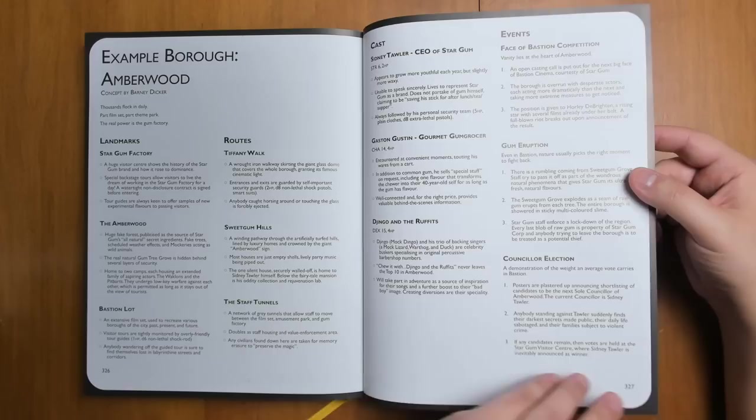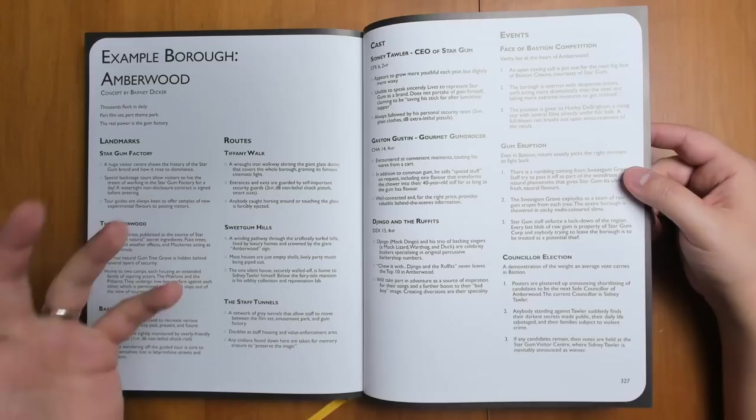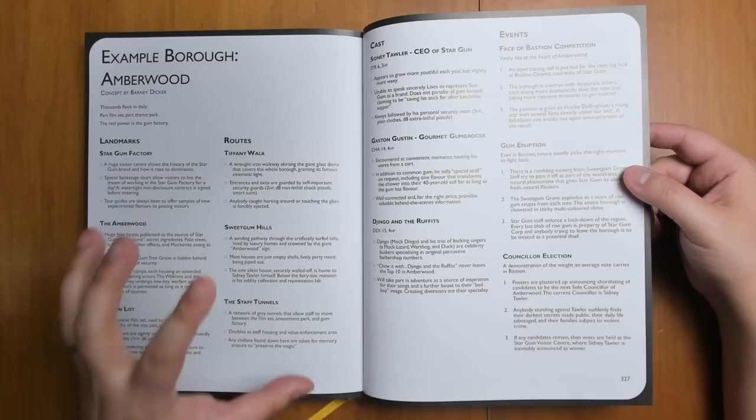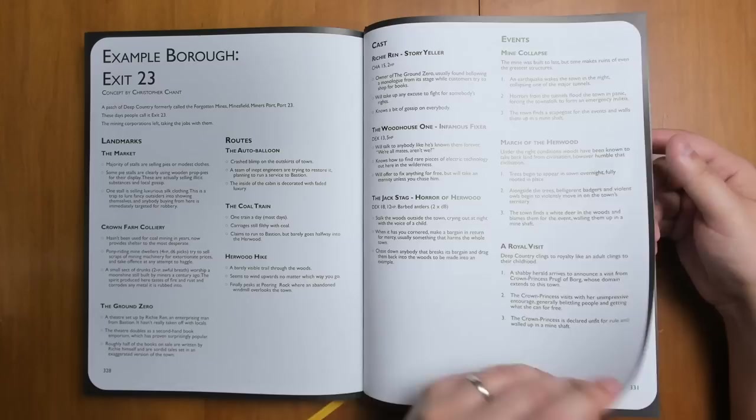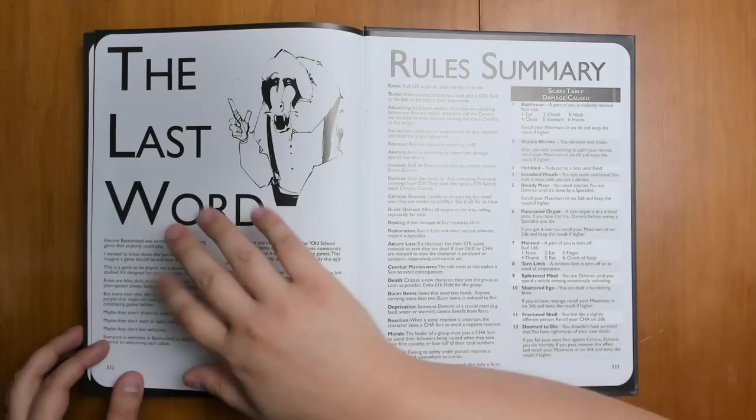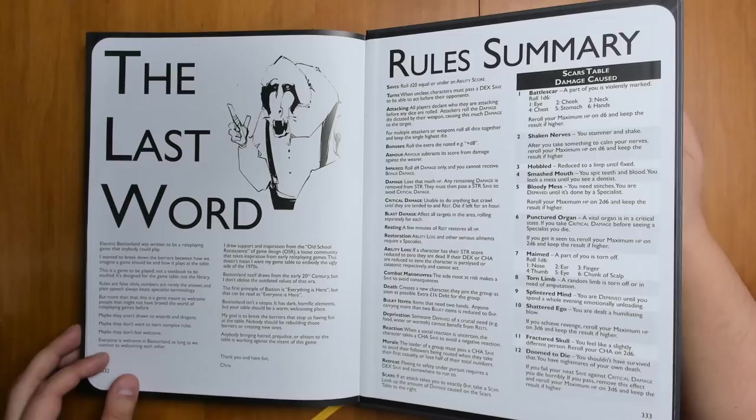Some example boroughs. So here's actual examples of areas of the city that you could use in your game. More example boroughs. The eternal library. And at the very end of the book we have a conclusion. The last word. And very nice. A rule summary. All right here. Making it very easy to look up important rules. Just because it's in the back cover.